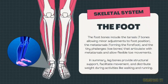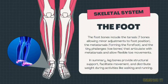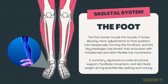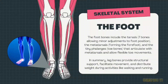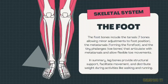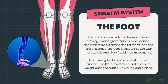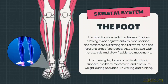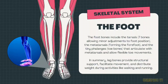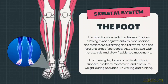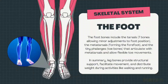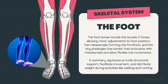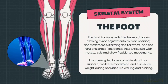The foot bones include the tarsals, or seven bones, allowing minor adjustment to foot position. The metatarsals, forming the forefoot. And the tiny phalanges, or toe bones, that articulate with metatarsals and allow flexible toe movements. In summary, leg bones provide structural support, facilitate movement, and distribute weight during activities like walking and running.